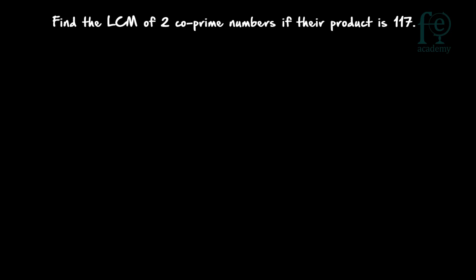Here you have to know an important equation: HCF × LCM. HCF means highest common factor, and LCM means lowest common multiple. The highest common factor of 2 numbers multiplied by the lowest common multiple of the same 2 numbers is equal to the product of those numbers. So for any 2 numbers A and B: HCF(A,B) × LCM(A,B) = A × B. That is the first important equation you have to know for solving these kinds of questions.